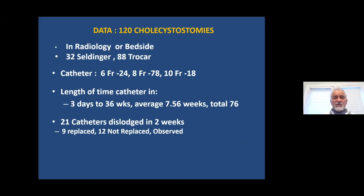The majority of cases were done under the trocar technique, where the catheter and needle are introduced as one assembly into the gallbladder. About two-thirds of catheters — 80 out of 120 — were 8 French. There were some 6 French and some 10 French. Eight French is probably best suited because it is thick enough that it does not break when left in the gallbladder for three to six weeks. We left the catheter in for three days to 36 weeks, on average about seven weeks.